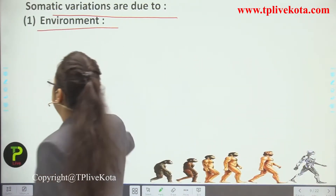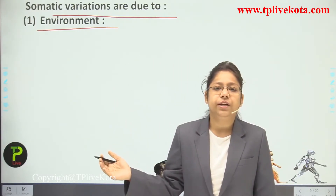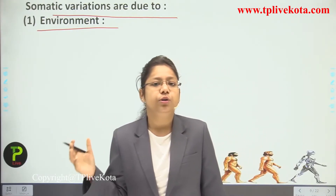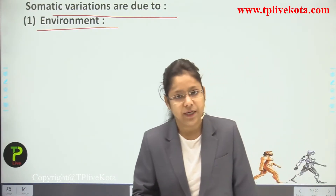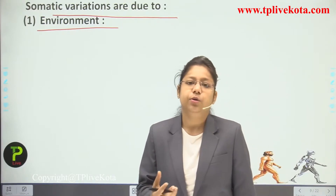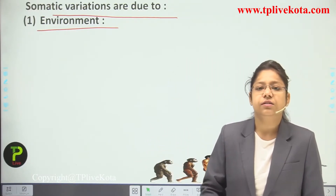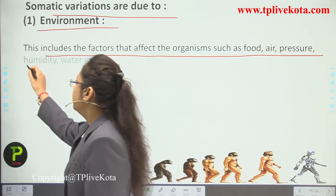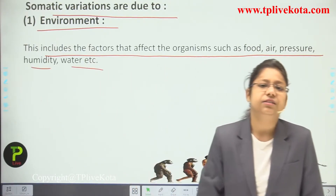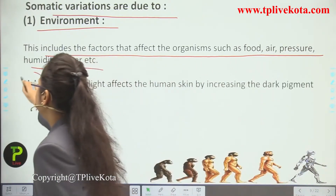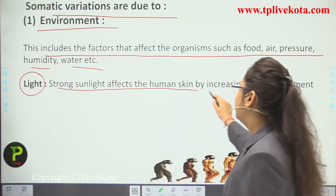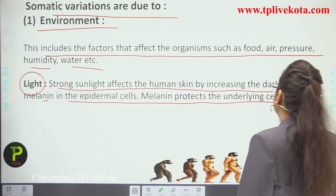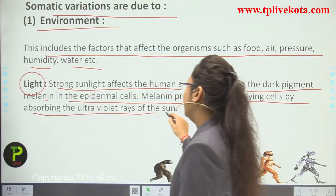Somatic variations are due to several factors. First, the environment — living in extreme cold or heat causes the body to adapt accordingly, which is a somatic variation. This includes factors like food, air pressure, humidity, and water. Regarding light, strong sunlight affects human skin by increasing the dark pigment melanin in the epidermal cells. Melanin protects underlying cells by absorbing ultraviolet rays of the sun.